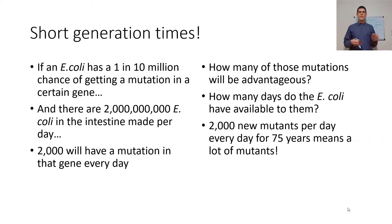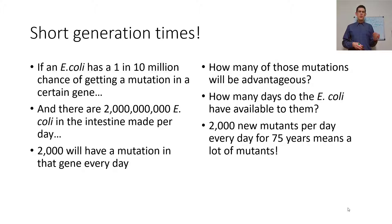How many nucleotides long is that gene? If it's 2,000 nucleotides long, there's a chance that every mutation could be tried for that gene. How many will be advantageous? How many neutral and accumulate? With 2,000 new mutants per day, every day for 75 years — a human lifespan — that's a lot of mutants. Short generation time means bacteria can evolve much faster than we can.